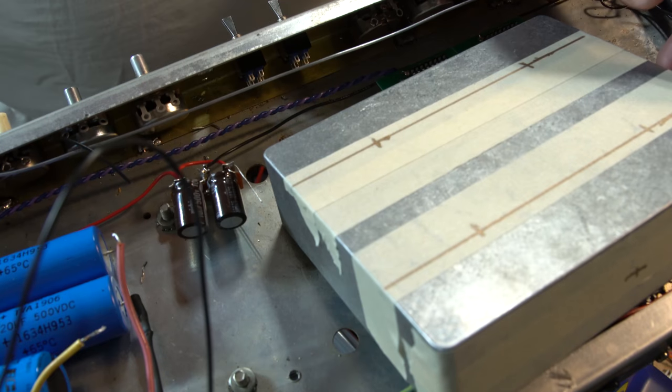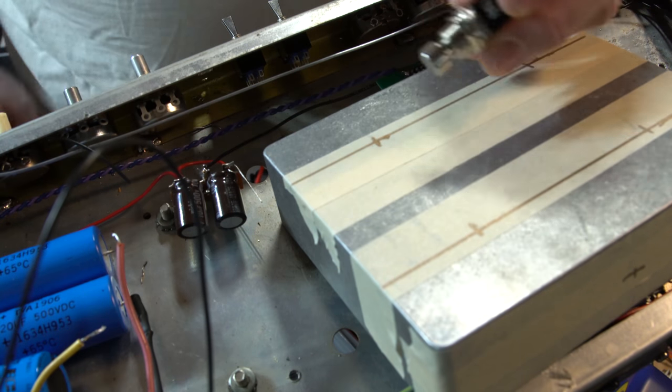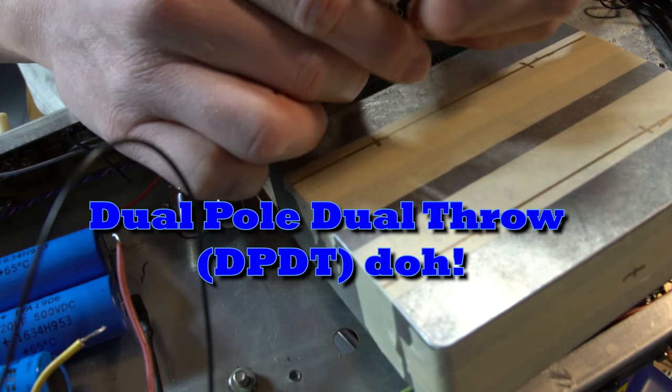So the foot switch does incorporate two switches. I've got a couple of single pole single throw foot switches here that I got off of I think it was Mouser.